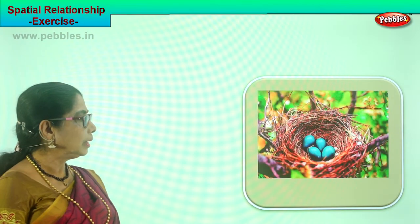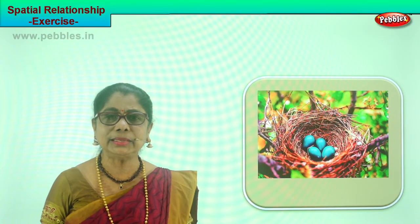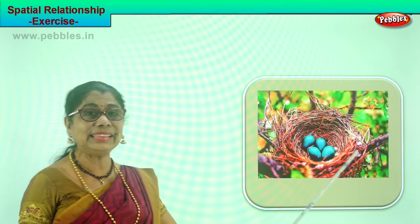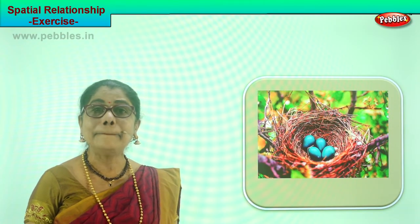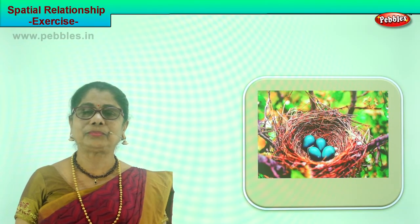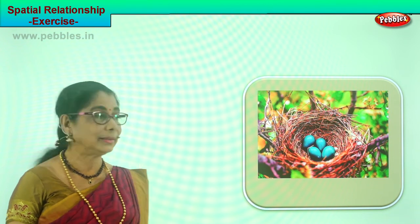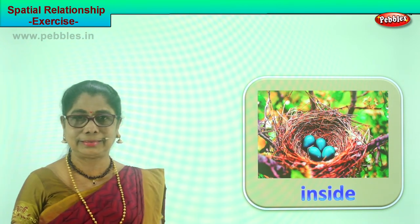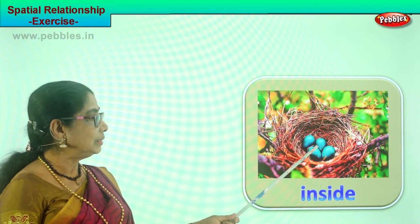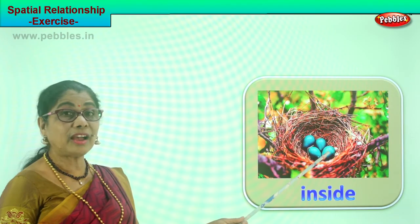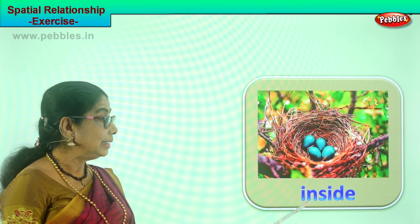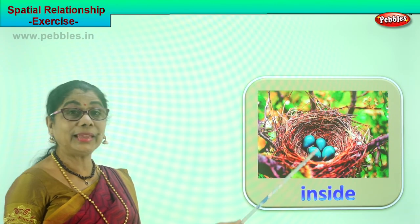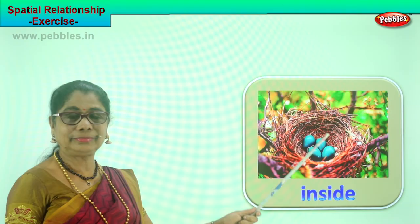Let's look at another picture. What is this? It's a picture of a nest — a birdie's nest. What is inside the nest? There are eggs inside the nest. What is inside the nest? There are four eggs inside the nest — one, two, three, four — inside.